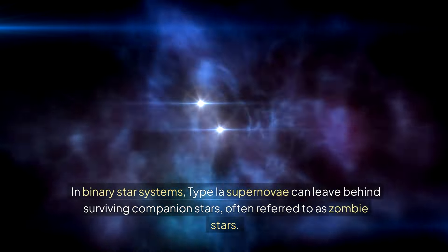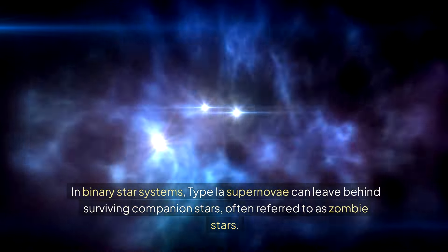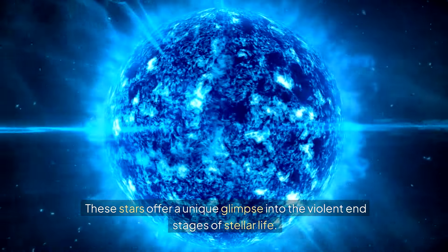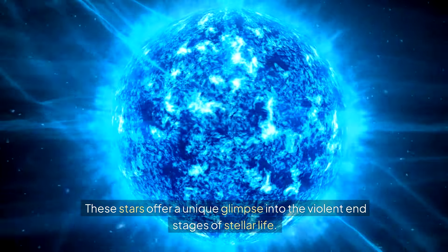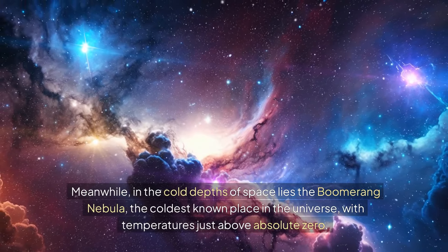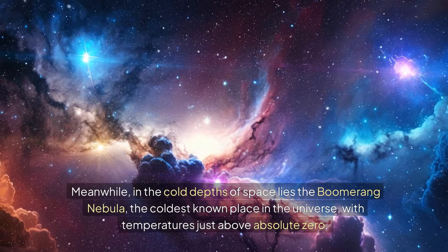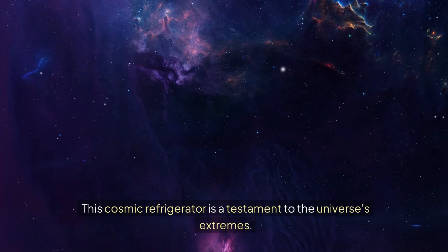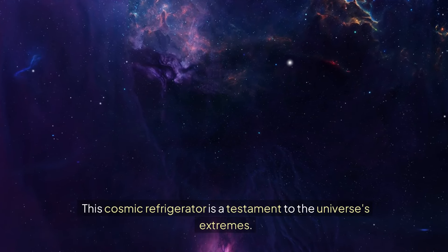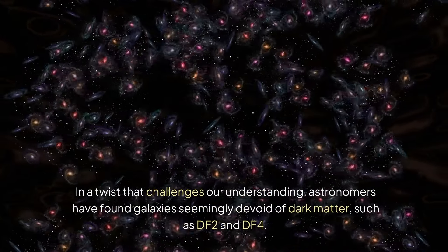Some stars refuse to die quietly. In binary star systems, type Ea supernovae can leave behind surviving companion stars, often referred to as zombie stars. These stars offer a unique glimpse into the violent end stages of stellar life. Meanwhile, in the cold depths of space lies the Boomerang Nebula, the coldest known place in the universe, with temperatures just above absolute zero. This cosmic refrigerator is a testament to the universe's extremes.